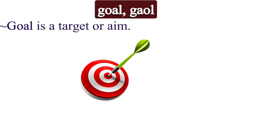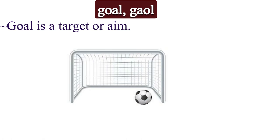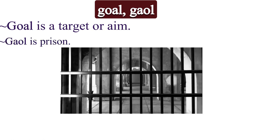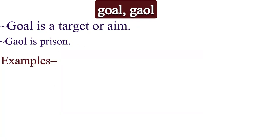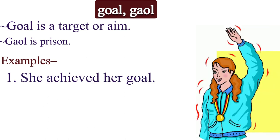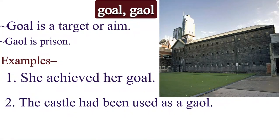Let us look at 'goal' and 'gaol.' Please pay attention to the pronunciation of G-A-O-L — it is pronounced as 'jail.' 'Goal' means target or aim, while 'gaol' means prison. Examples: She achieved her goal. The castle had been used as a jail.